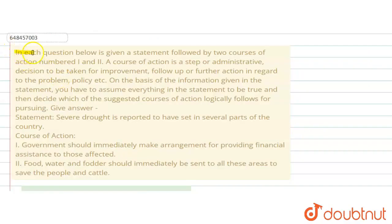The question says, in each question below is given a statement followed by two courses of action, 1 and 2. A course of action is a step or administrative decision to be taken for improvement, follow up, and further action in regard to the problem.